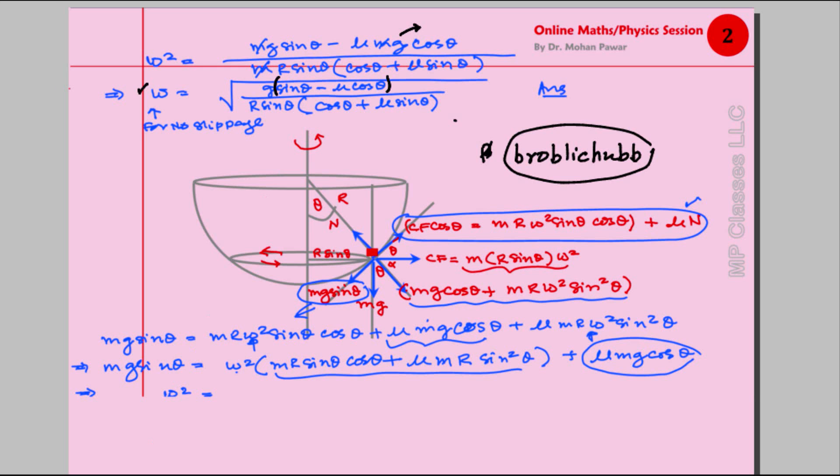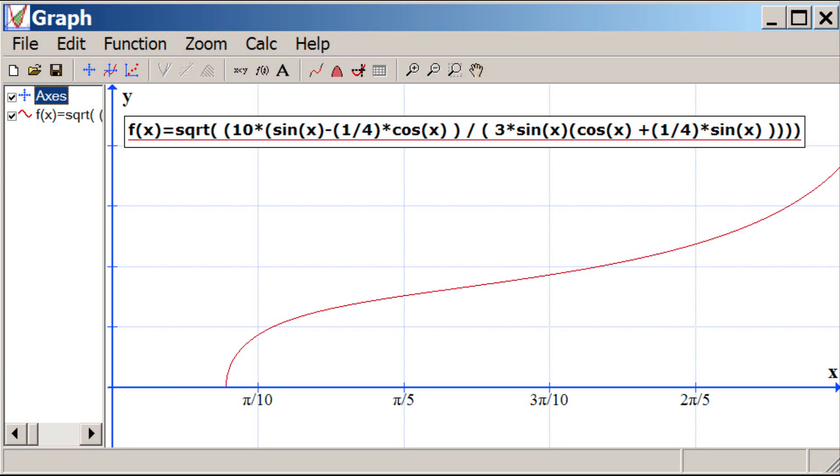The expression, this one, is already plotted in Graph. Here is that function: f(x), which is given on the right side, which is the same thing: square root of two quantities, one in numerator and denominator. The 10 shows it's the g, sin x is sin θ, cos x is cos θ, one-fourth is μ, and wherever you see three, that is the radius. So we have the same expression what we derived.